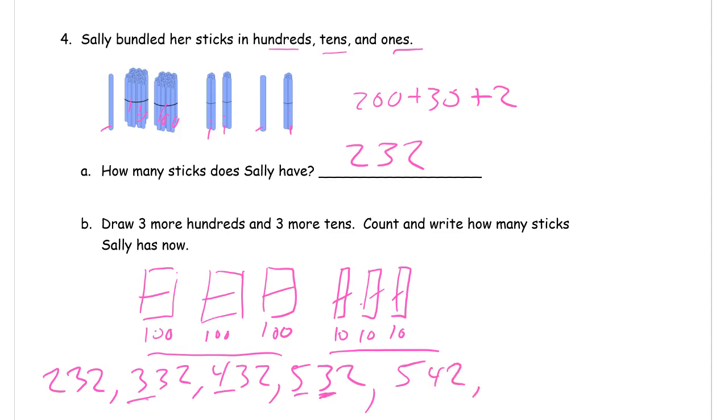542, right? Because we're looking at that tens digit. That's the one that's going to change. 552, because we're still going to have these two ones. So 542, 552, 562. Done.